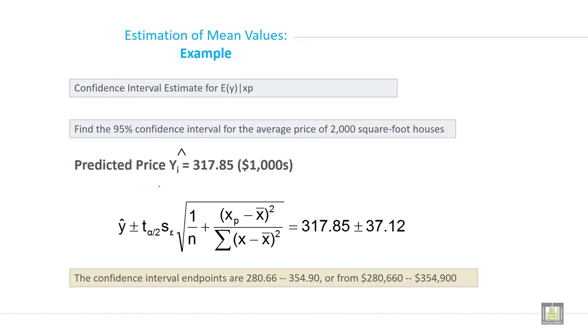Estimation of mean value example. Confidence interval estimate of the error term. Find the 95% confidence interval for the average price of 2000 square foot house. So predicted price 317.85 multiplied by 1000.